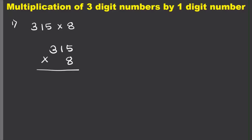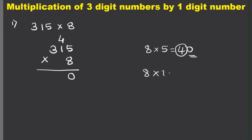Now we are ready to multiply. 8 times 5 is 40, so I write 0 here and carry the 4 to the tens place. Now 8 times 1 is 8, but we have to add the carried 4, so 8 plus 4 equals 12. I write 2 down here and carry the 1.